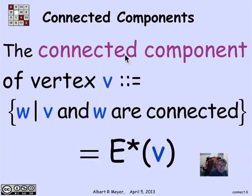Another way to define this, the set of W that are connected to V, is simply it's taking the image of V under the greater than or equal to 0 walk relation. E star is our notation for the walk relation in the graph whose edges are E, including walks of length 0.